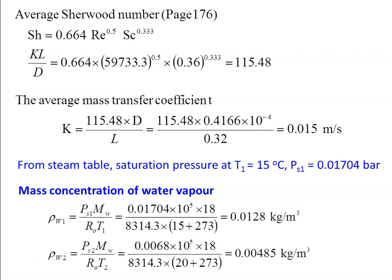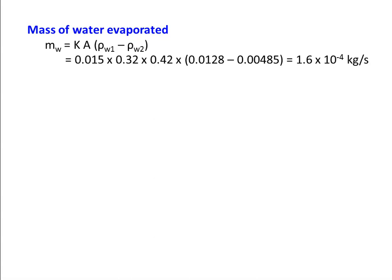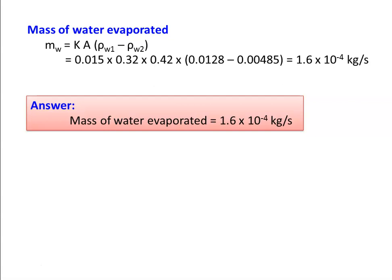Mass concentration of water vapor at the surface: ρ_w1 = p_s1 × M_w / (R_u × T) = 0.0128 kg/m³. Density of water vapor in air at 20°C: ρ_w2 = 0.0068 × 10⁵ × 18 / (R_u × 293) = 0.00485 kg/m³. Mass of water evaporated: ṁ_w = k × A × (ρ_w1 − ρ_w2) = 0.015 × 0.32 × 0.42 × (0.0128 − 0.00485) = 1.6 × 10⁻⁴ kg/s. The mass of water evaporated is 1.6 × 10⁻⁴ kg/s.